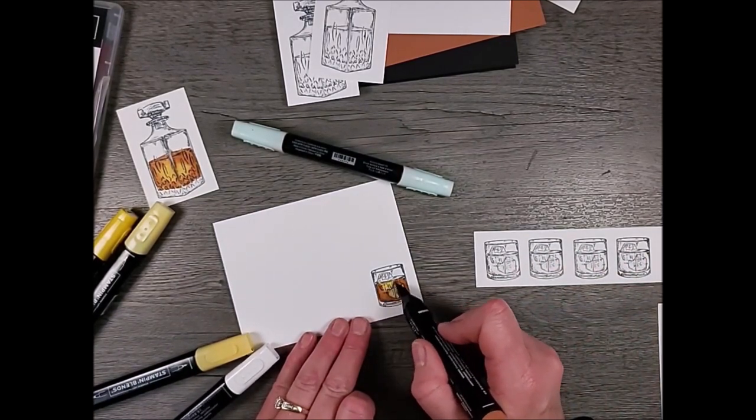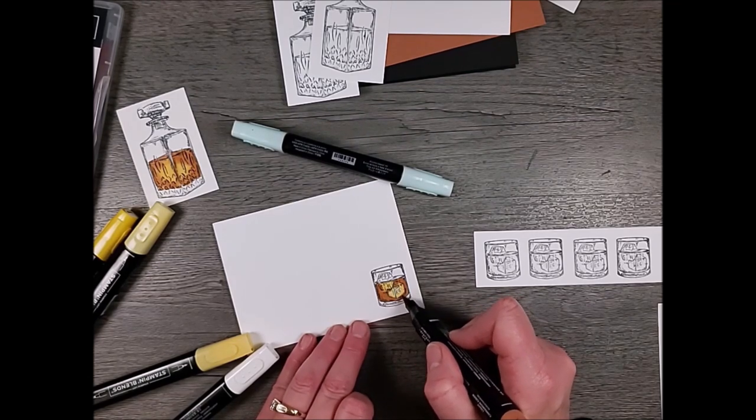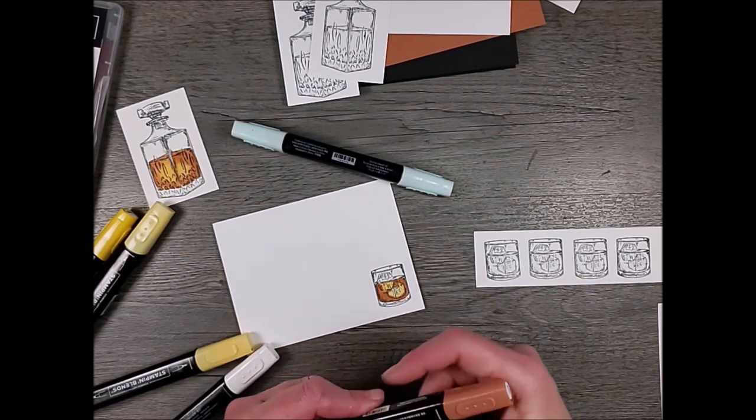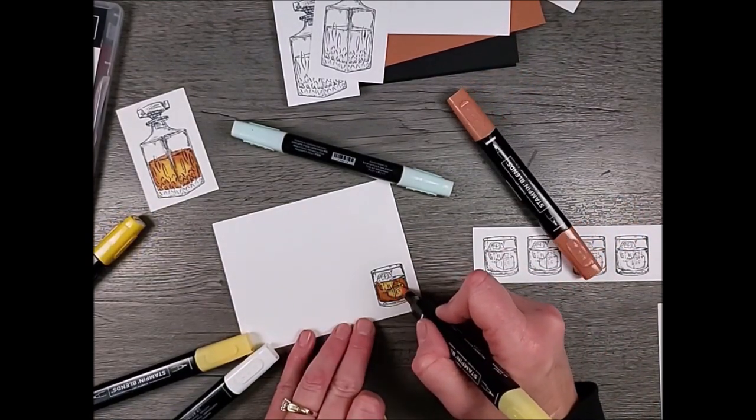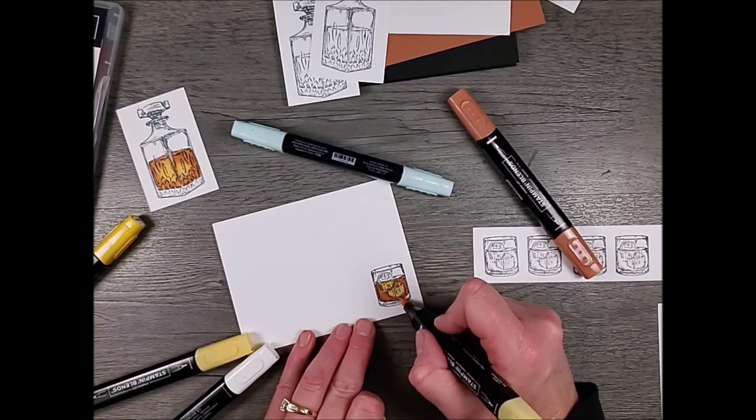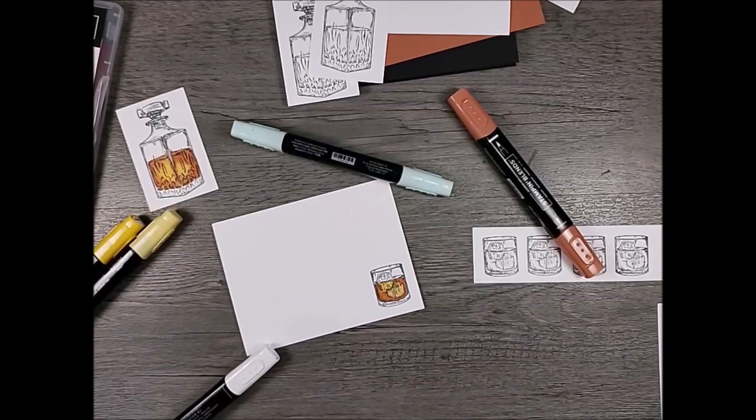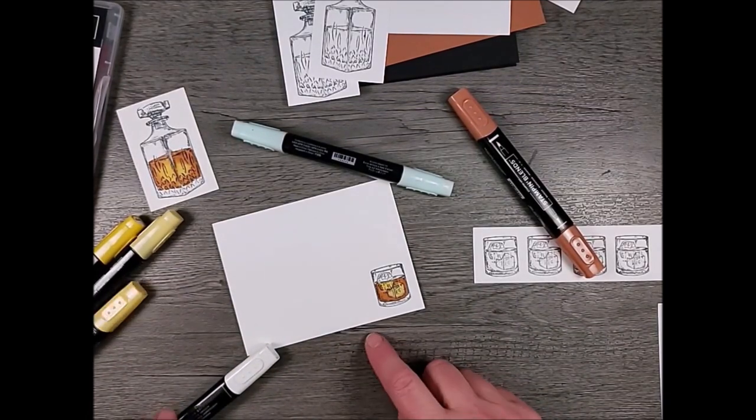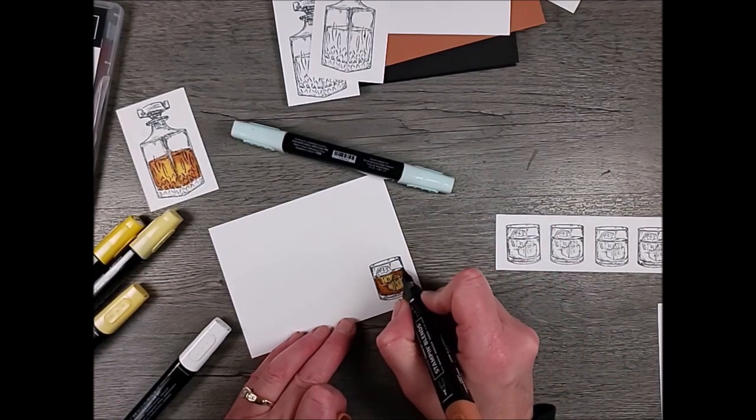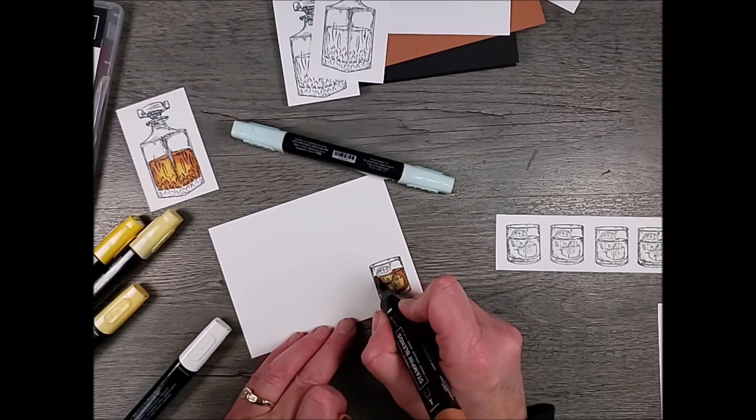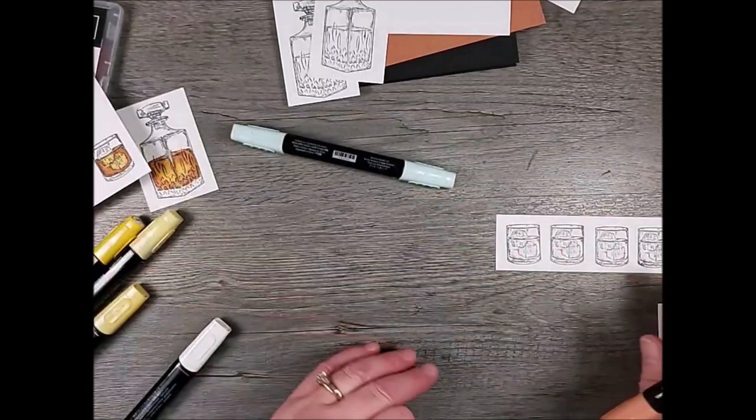And so we're going to sort of see what happens. So this is the light saffron. And so we just kind of went over that. I kind of feel like I need to add some more of this booze color, I guess, for lack of a better word. Some of this whiskey color. So like I said, I'm just really struggling with what to do with these ice cubes. I feel like they shouldn't be totally booze colored, but yet, you know.